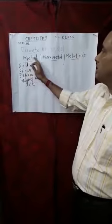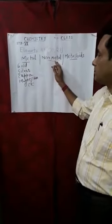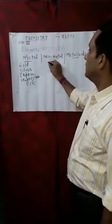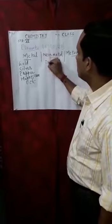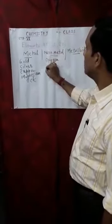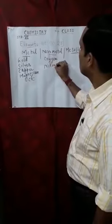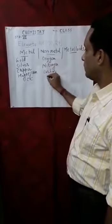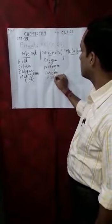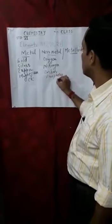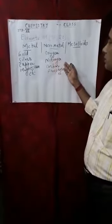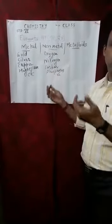Now we shift from metals to non-metals. There are also so many examples of non-metals. Let us see some of them: Oxygen, Nitrogen, Carbon, Phosphorus, and there are so many more non-metals.